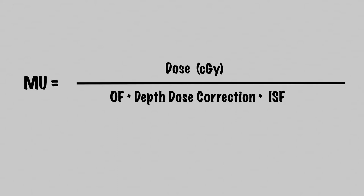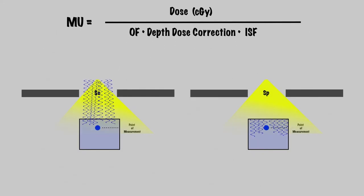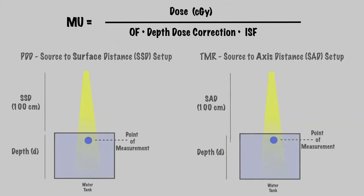The collimator scatter, or S sub C, and phantom scatter, S sub P, together are termed the output factor. The output factor will account for the change in dose rate due to field size. The depth dose correction factors of PDD and TMR values will be needed for the SSD and SAD setups respectively. Physicists measure each of these values - the output factor, the PDD, and the TMR - during commissioning of each LINAC and generate lookup tables, which are used to perform our MU calculations.